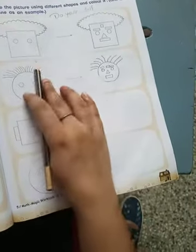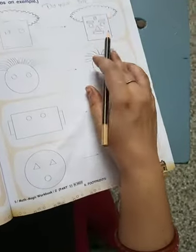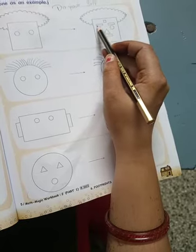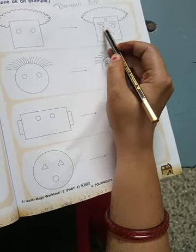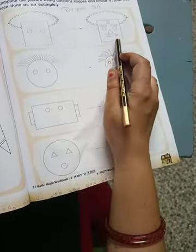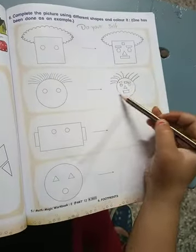Here you can complete the picture with a shape. Here you can have a square, a rectangle, a circle, a nose, a triangle, a rectangle, a mouth. So you can complete the picture here. Here you can complete the picture with a circle.